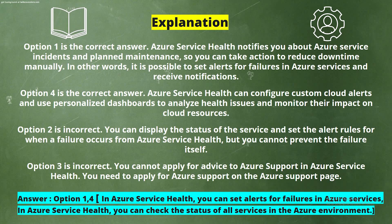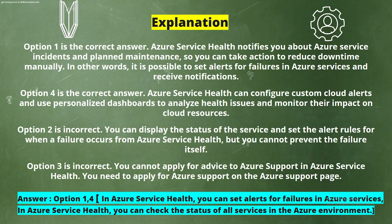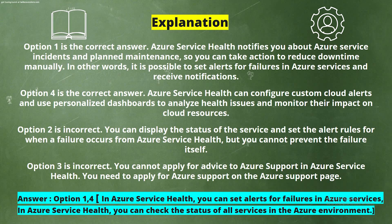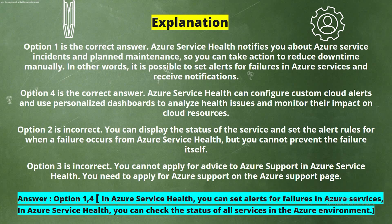Option 2 is incorrect. You can display service status and set alert rules for when a failure occurs from Azure Service Health, but you cannot prevent the failure itself. Option 3 is incorrect. You cannot apply for advice to Azure support in Azure Service Health — you need to apply for Azure support on the Azure support page.